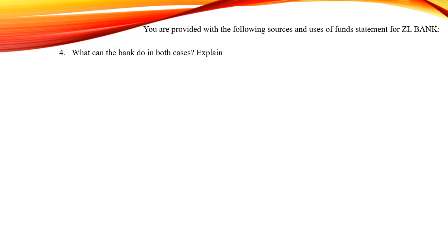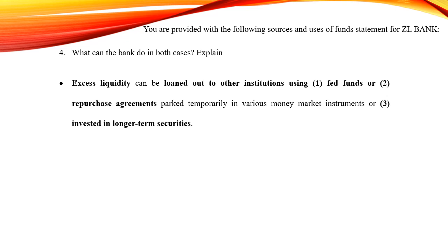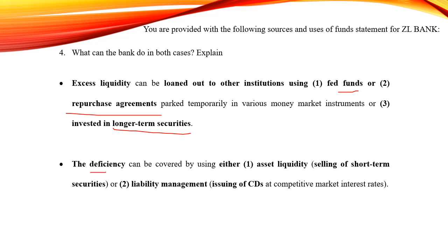Let's move to question four: what can the bank do in both cases? Regarding excess liquidity, it can be loaned out to other institutions using federal funds or repurchase agreements, or invested in longer-term securities, allowing the bank to earn a profit. Regarding a deficiency, it can be covered using asset liquidity — for example, selling short-term securities — or through liability management by issuing certificates of deposit at competitive market interest rates.